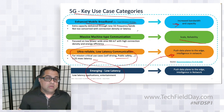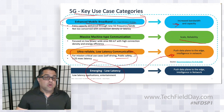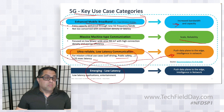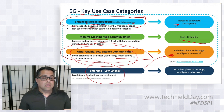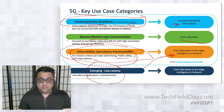Out of all three, the first use case — eMBB — is what operators are deploying today. The third use case, URLLC, is what operators are planning for. There is not a use case being deployed in the world today for URLLC, but it will be coming, especially with these new applications coming up.